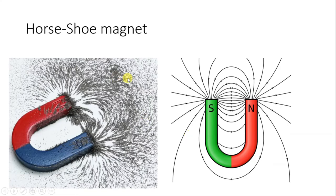In the same way we visualized for a bar magnet, we can also visualize for a horseshoe magnet. A horseshoe magnet is in the shape of a U, similar to the shape of a horseshoe. From north to south, these kinds of field lines can be mapped and the same can be observed with the help of iron filings.